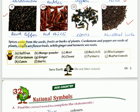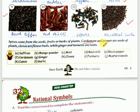Please read what is written here: spices come from the seeds, fruits or barks of plants. Cardamom and pepper are seeds of plants. Cloves are the flower buds, while ginger and turmeric are the roots.